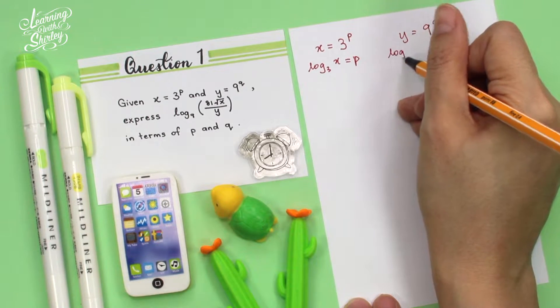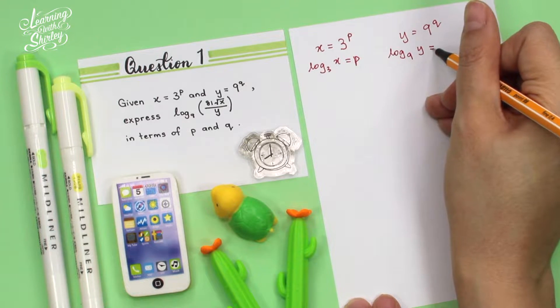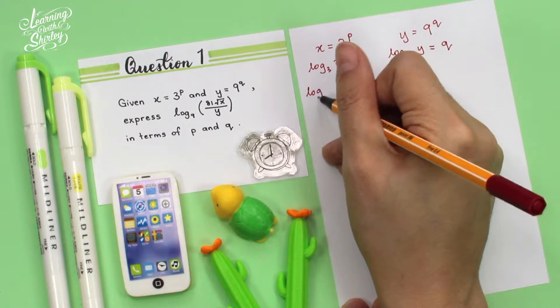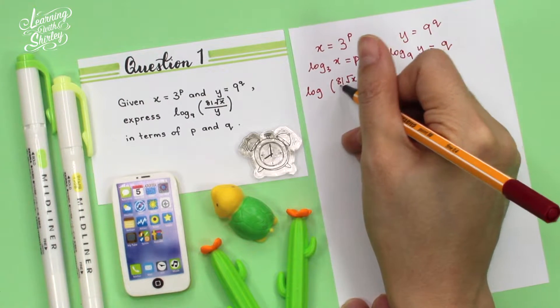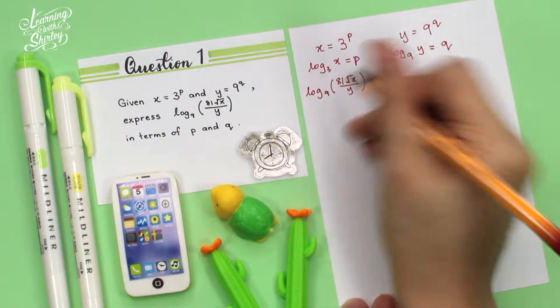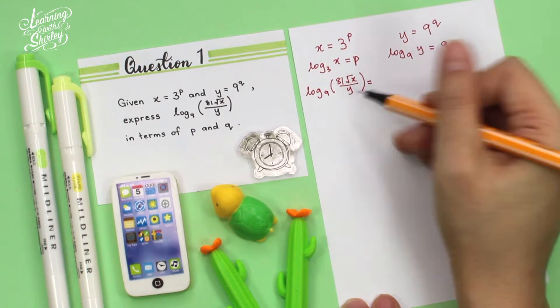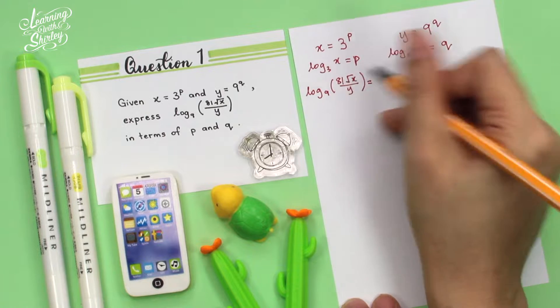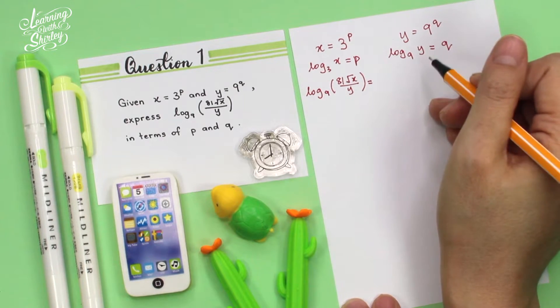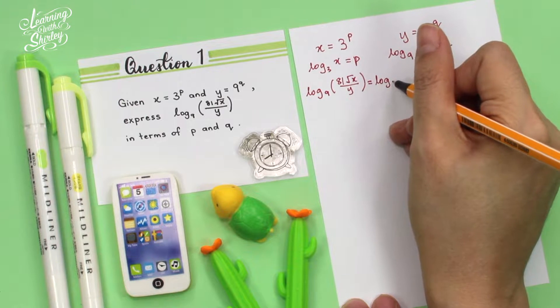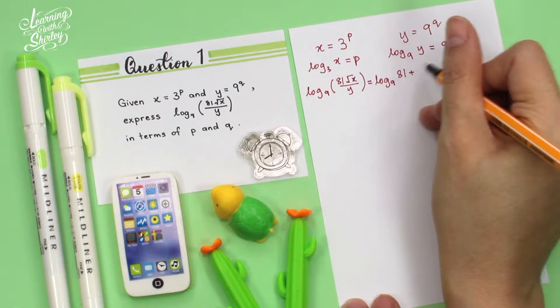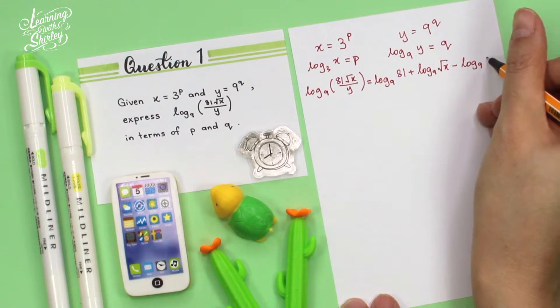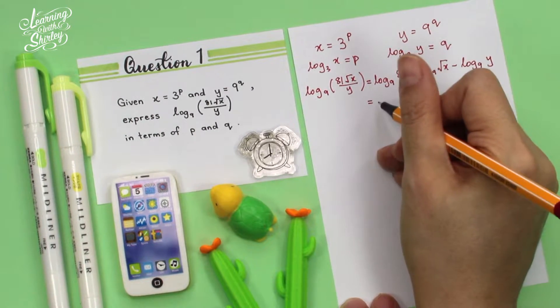And for this, it will be log base 9 of y equals q. Then I'm going to write this question over here. So it becomes log base 9 of (81√x / y) equals... So I'm going to split this into 3 different logs for 81, square root of x, and also for y. When we multiply, we add the logs. If it's divided, we subtract the log.